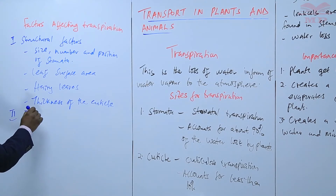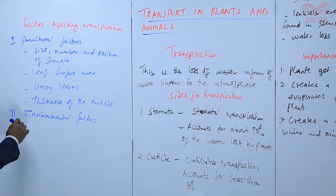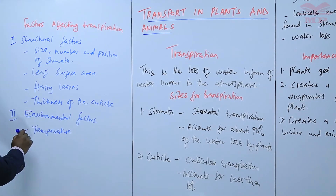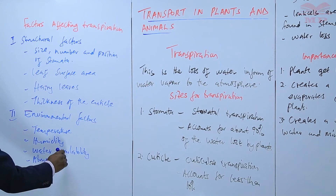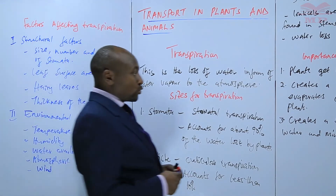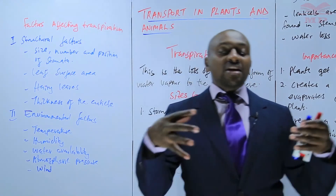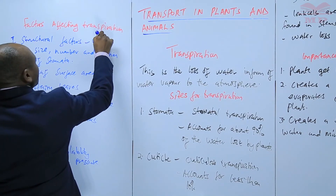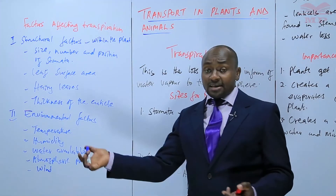Then we have the environmental factors that affect transpiration, such as temperature, humidity, water availability, atmospheric pressure, and wind. Environmental factors are outside the plant — they are in the environment, as the term suggests — whereas structural factors are within the plant.